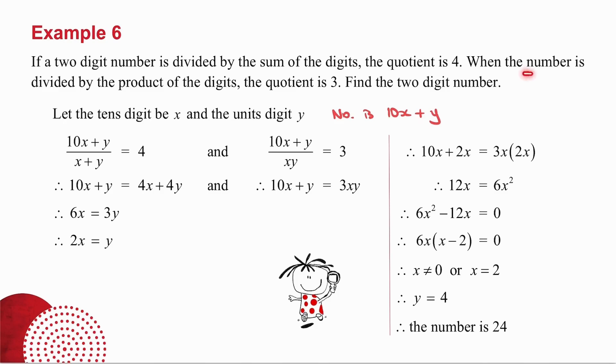They then take the number again and divide it by the product of the digits. So I take 10X plus Y divided by XY and I get an answer of 3. Bring the XY across and multiply.